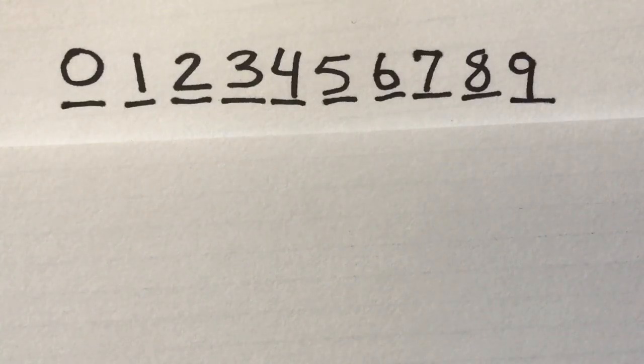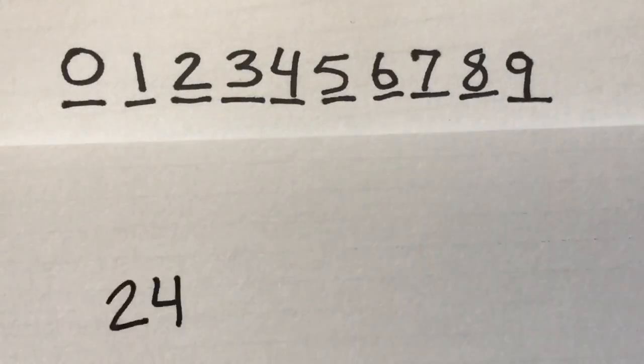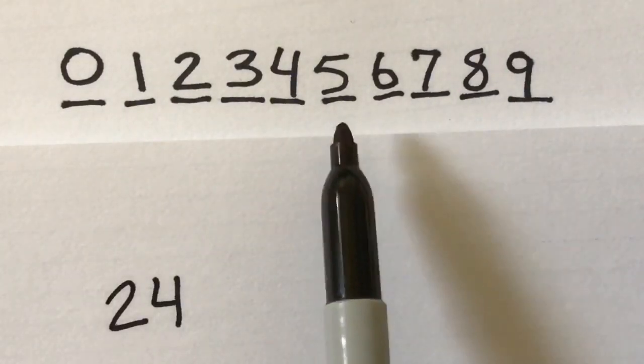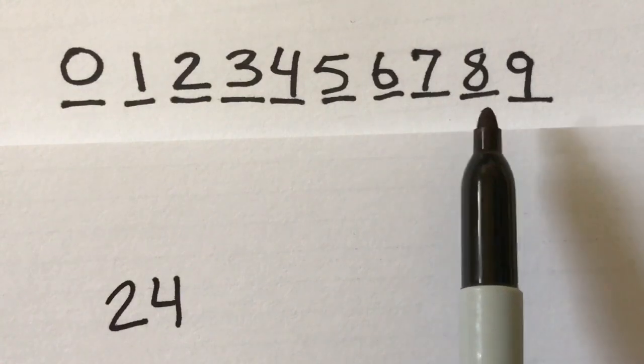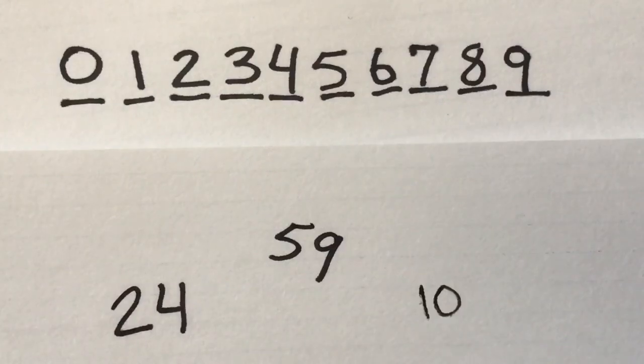When you combine these different digits together, you create other numbers. For example, you put 2 and 4 together, it creates 24. When you combine the digits 5 and 9, it creates 59. Combine the digits 1 and 0, it creates the number 10.